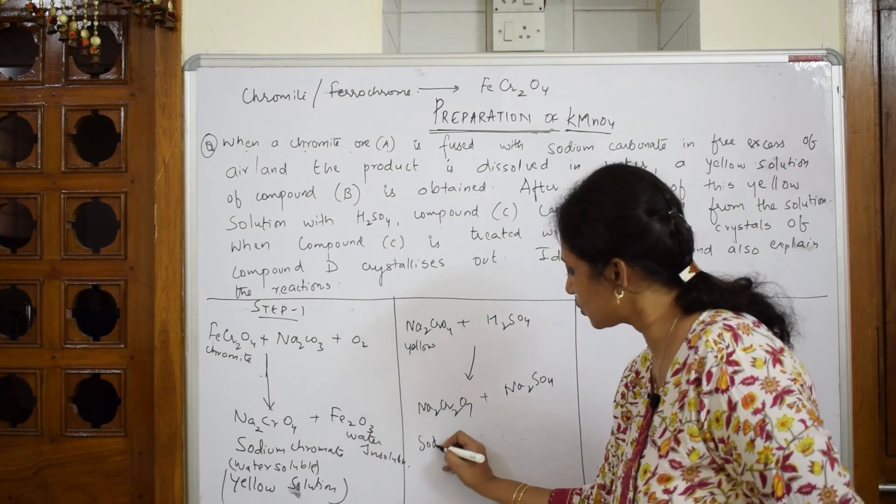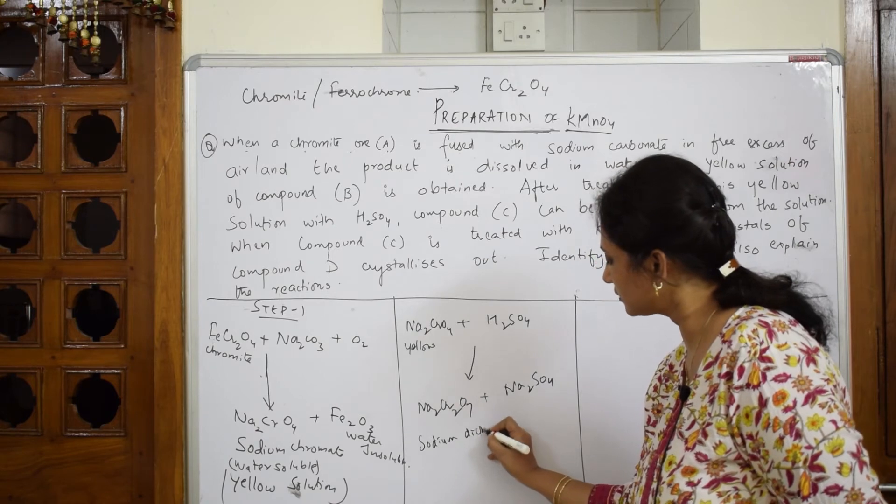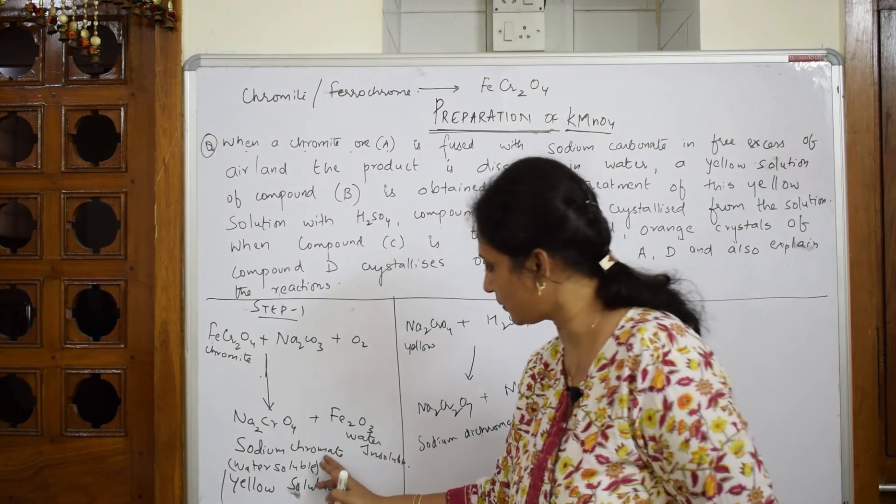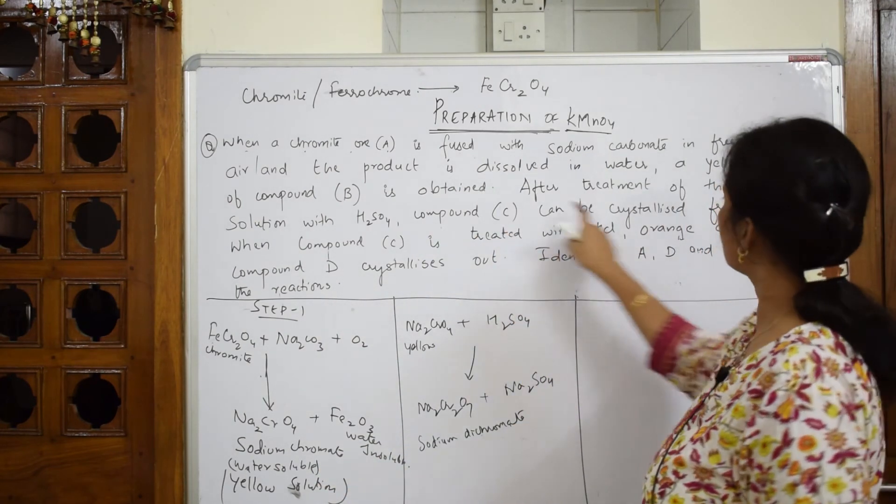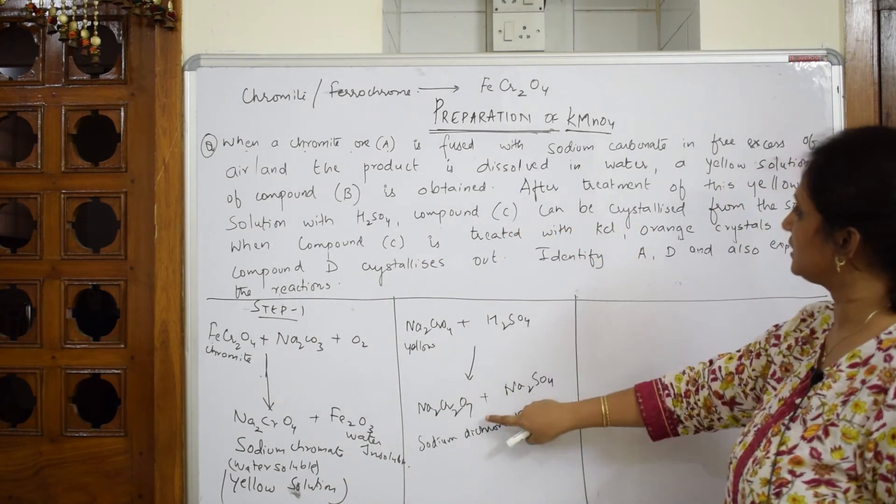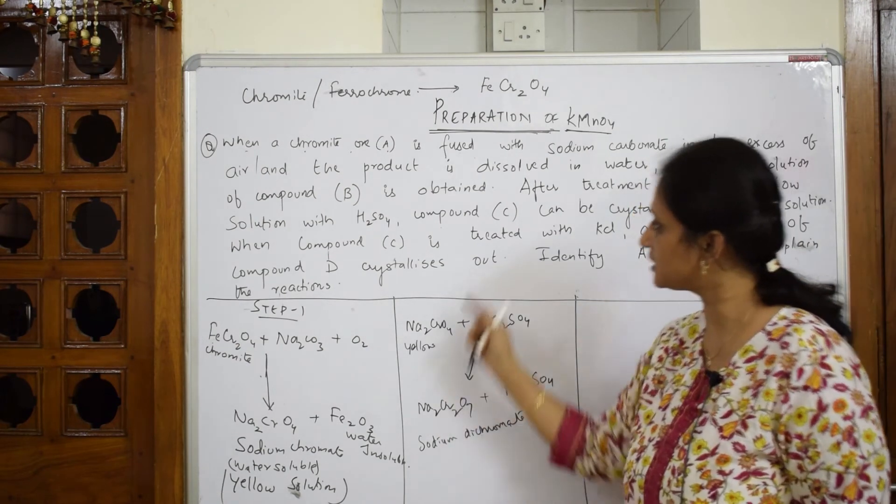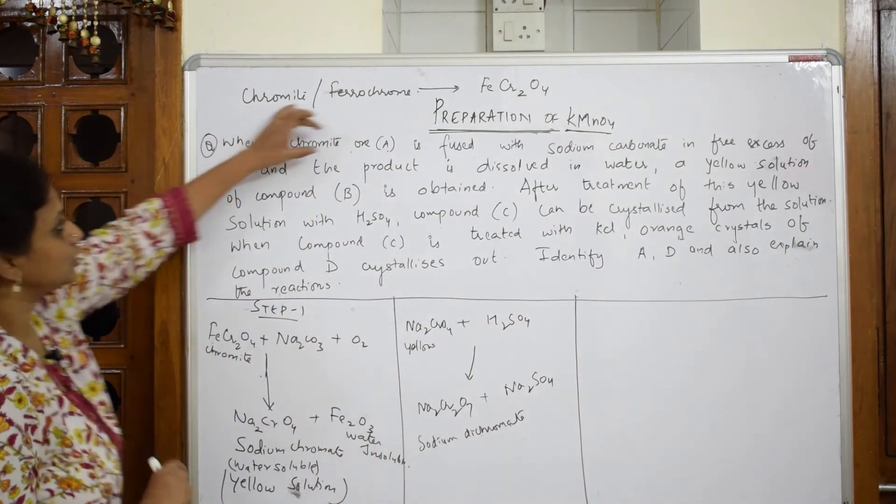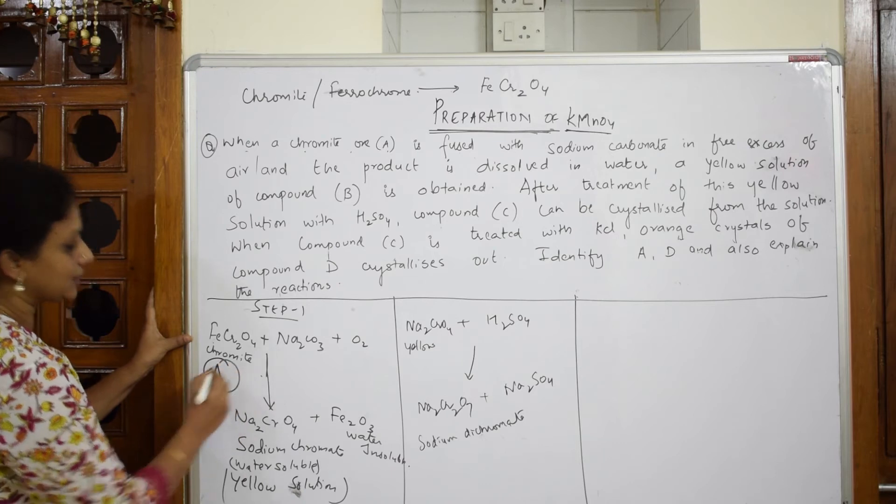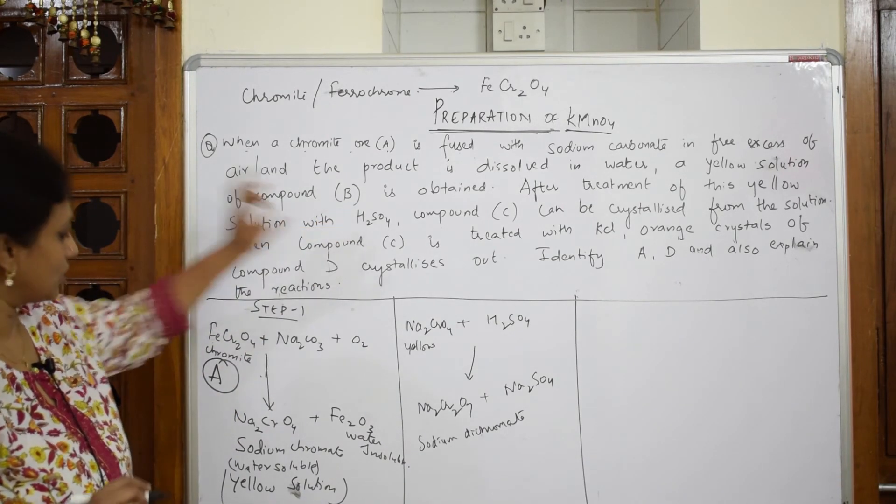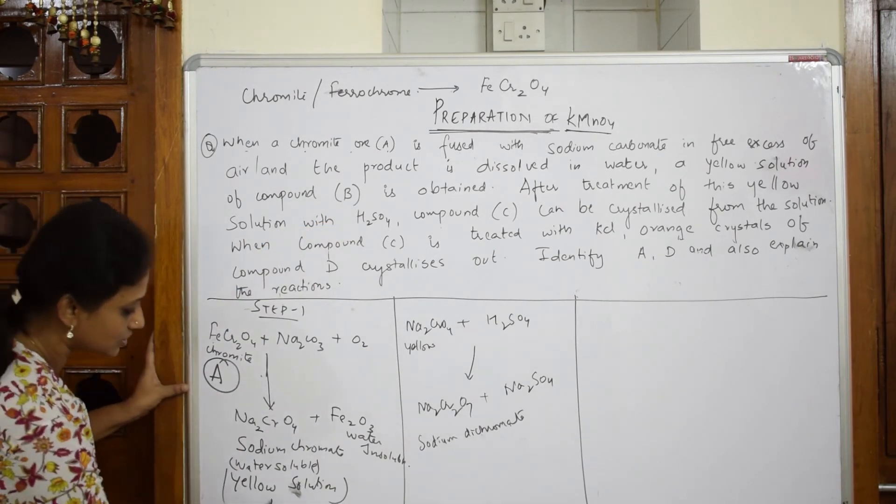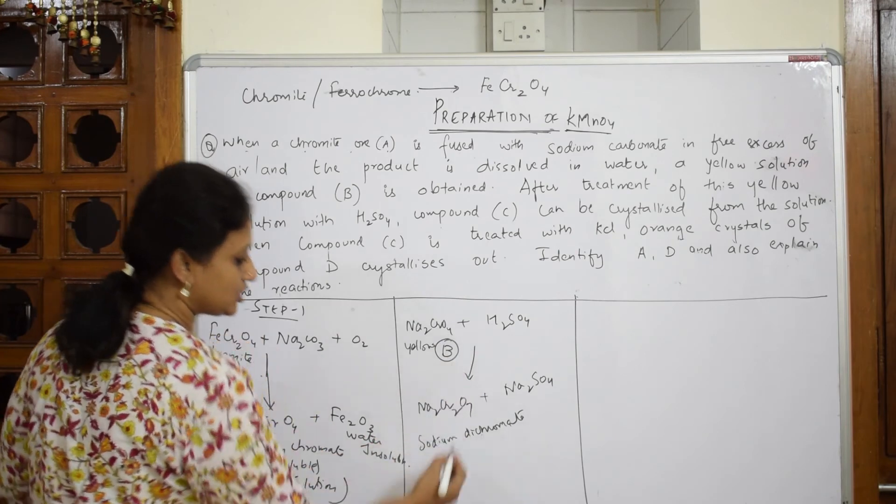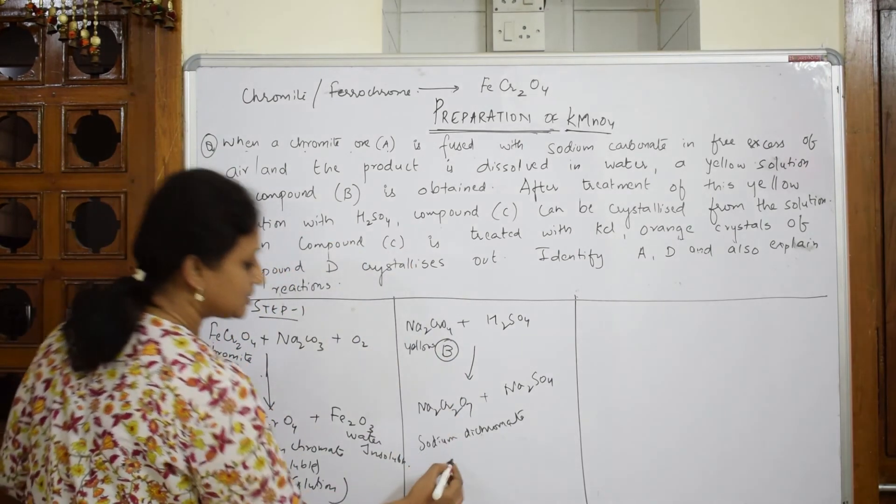Let me name this sodium dichromate. What is the difference? Earlier, it was chromate. Then it was chromate. Now, it has become dichromate. The compound C can be crystallized from the solution. When compound C is treated with KCl, if you're getting confused, what you do? First, you've got compound A. Try to name this as compound A. You've got a yellow colored solution. This is yellow colored solution, compound B.